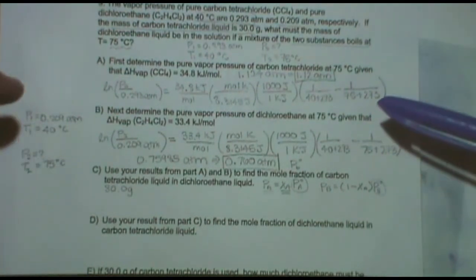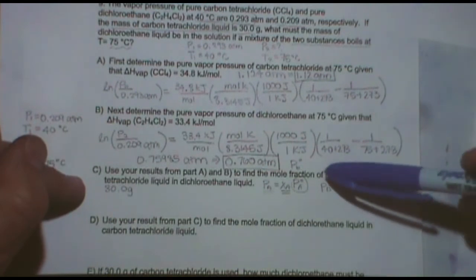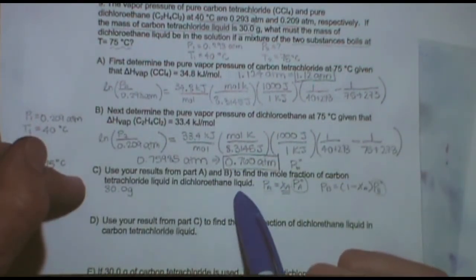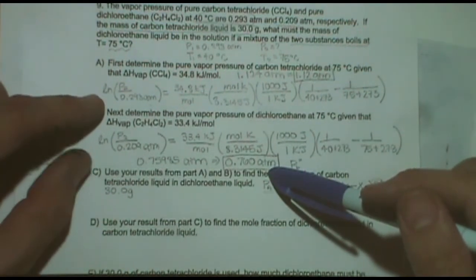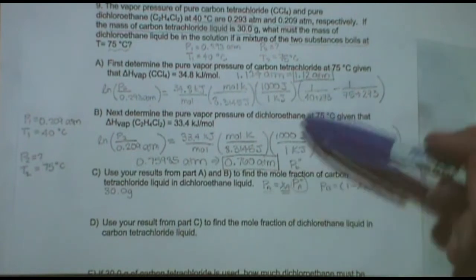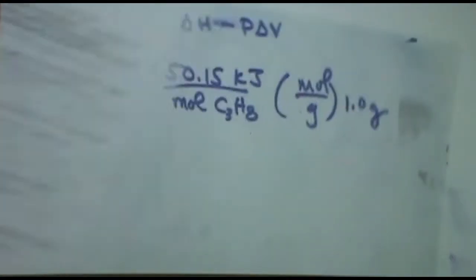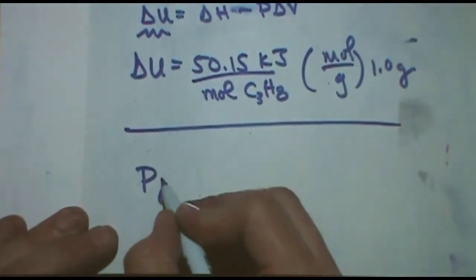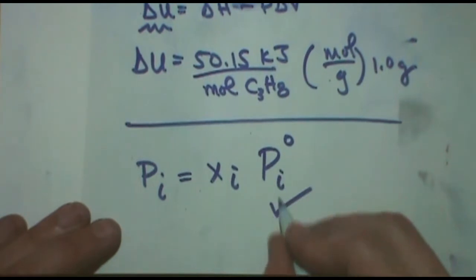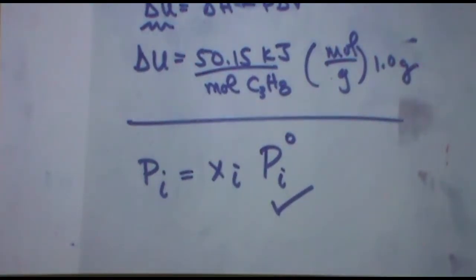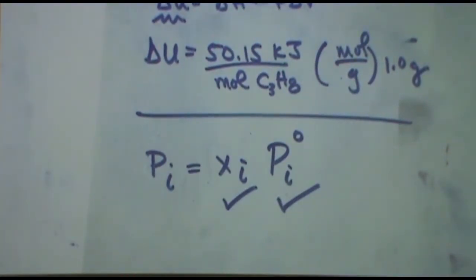So the first two, it looks like you got right. They want to just find the vapor pressure somewhere else, so you're just doing a Clausius-Clapeyron, because you have a new state. That looks good. Use your results from A and B to find the mole fraction of tetrachloride liquid and dichloroethane liquid. You're going to use these pressures that you're given. It looks like you've converted the pure pressures, so these are the new pure pressures.